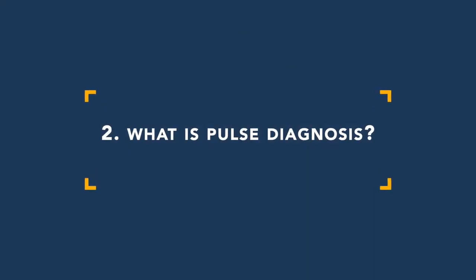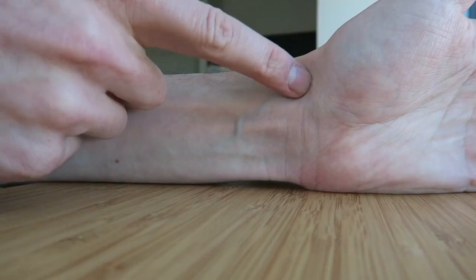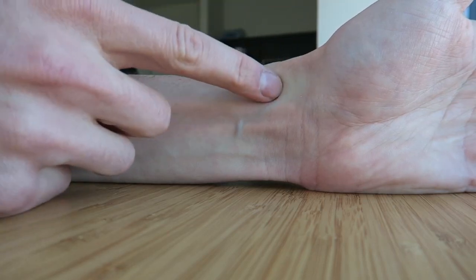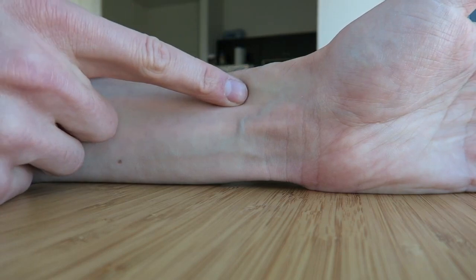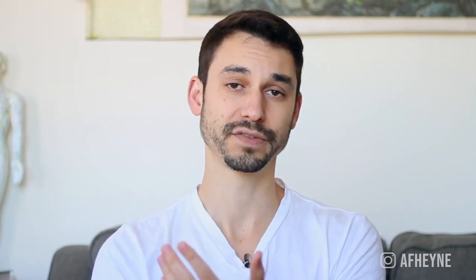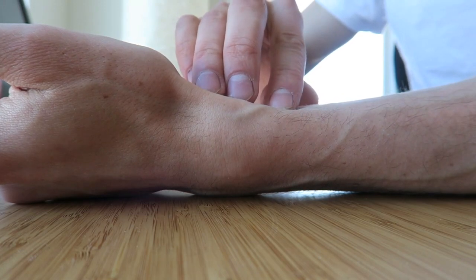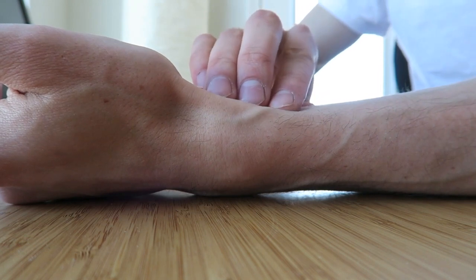Pulse diagnosis is where a practitioner puts their fingers — typically three fingers — on the radial artery, on the side of your hand where your thumb is. The first position, called the cun, is the distal position, closest to your hand. The second is the middle position, called the guan. The third position, closest towards your torso, is called the chi. The cun, guan, and chi each technically have three different depths: superficial, where you place your hand very lightly; moderate, where you apply moderate pressure; and deep, where you apply the most pressure.